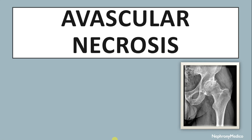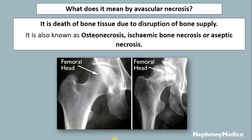Hello and welcome. Let's talk about avascular necrosis. What does avascular necrosis mean? It is the death of the bone tissue due to disruption of bone blood supply. It is also known as osteonecrosis, ischemic bone necrosis, or aseptic necrosis.